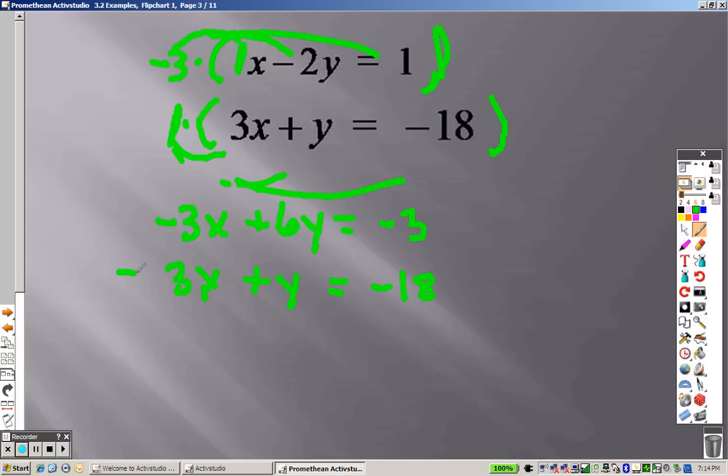Because we're going to add these now when you add them together, negative 3 and 3 cross out. Well, 6 and 1 is 7y, and we end up getting negative 21. So to solve this, you would just divide both sides by 7. You get y equals negative 3.